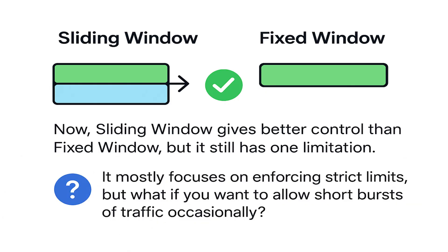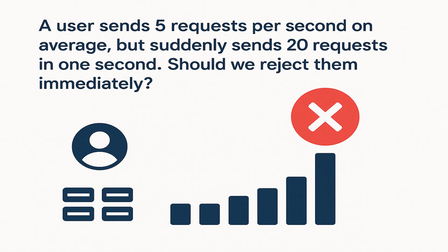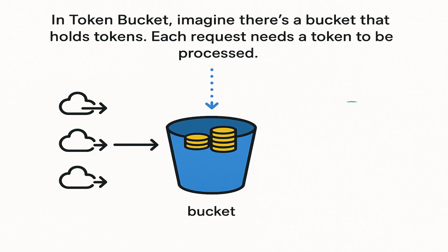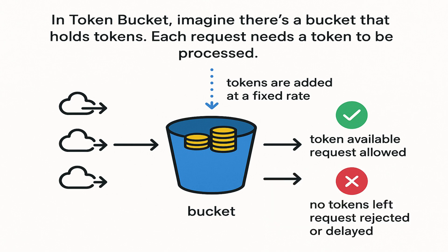The sliding window gives better control than the fixed window, but it still has a limitation: it mostly enforces strict limits. What if you want to allow short bursts of traffic occasionally? For example, a user averages five requests per second but suddenly sends 20 in one second — should we reject them immediately? Not always. If overall usage is within limits, we might want to allow such bursts. That's where the token bucket algorithm comes in. Imagine a bucket that holds tokens; each request needs a token to be processed. Tokens are added at a fixed rate — if a token is available, the request is allowed; if not, it is rejected or delayed.